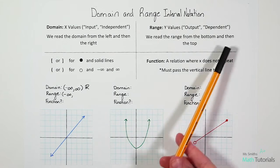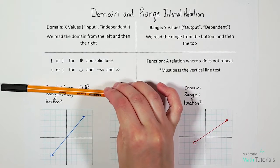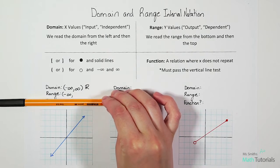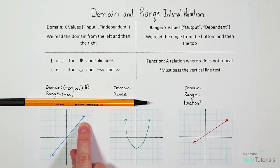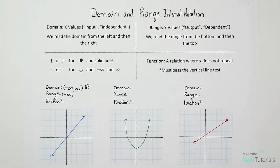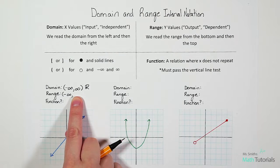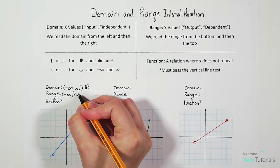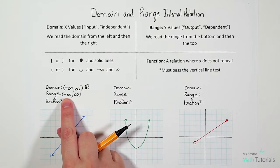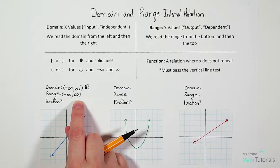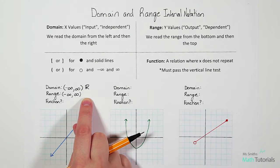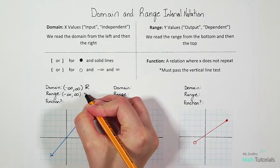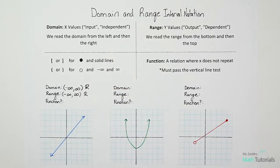Now we read from the top — what's the first place we hit? Another arrow. An arrow means infinity. It's on the right side of our answer and it's pointing up, so it's called positive infinity. Notice again, we've got negative infinity to positive infinity. So if we recognize that early, we could also just put our answer as all real numbers.